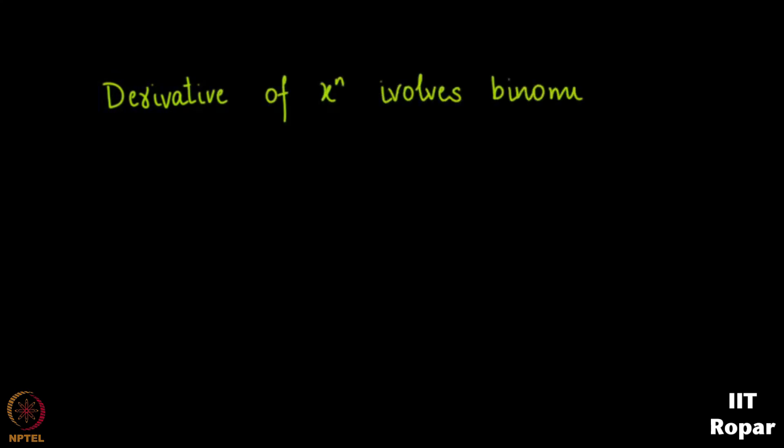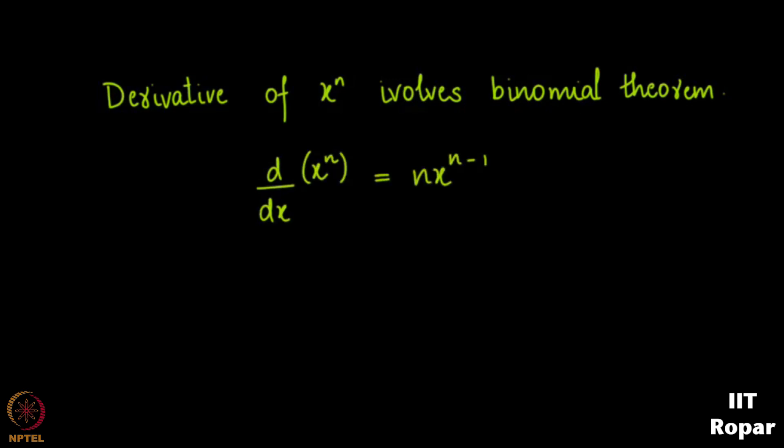The derivative of x^n involves the binomial theorem. The derivative is a concept from calculus, and the proof involves certain technicalities which I leave to you to check. But the result is: the derivative of x^n is n · x^(n−1), and this uses the binomial theorem.